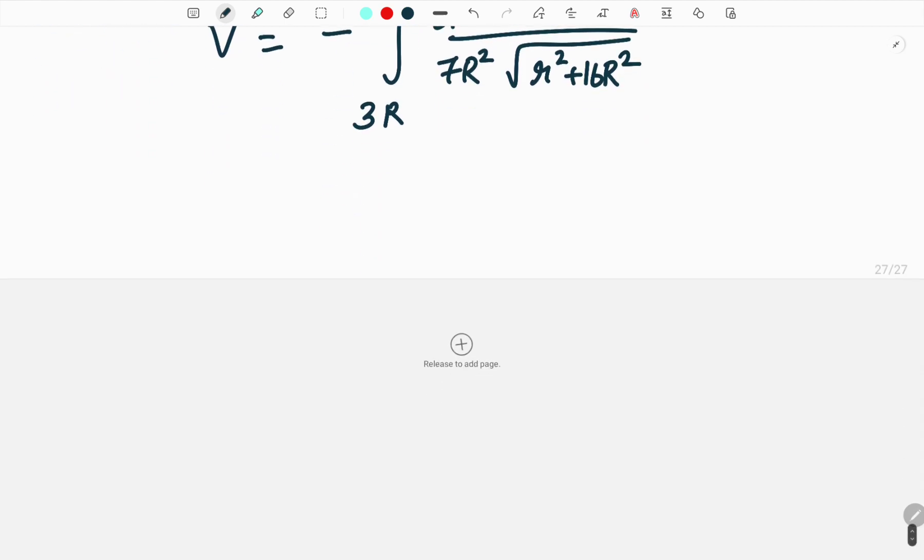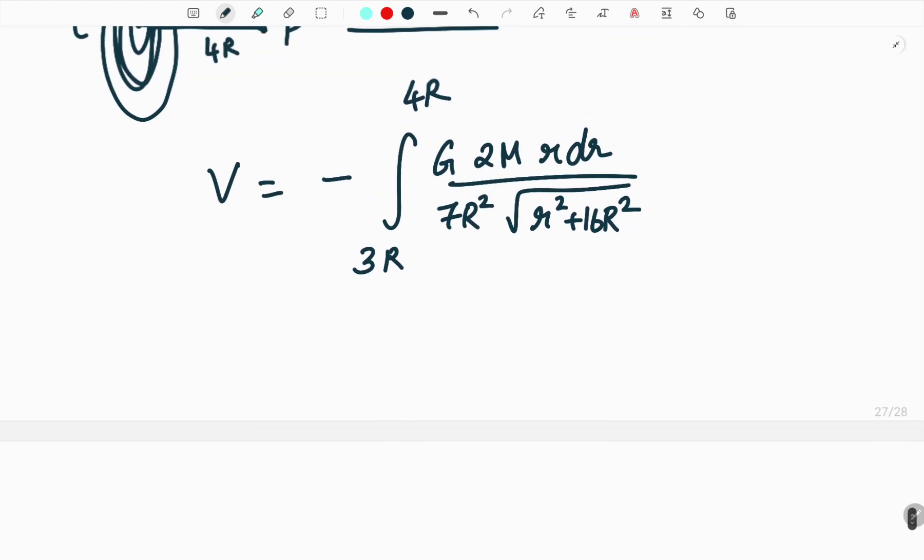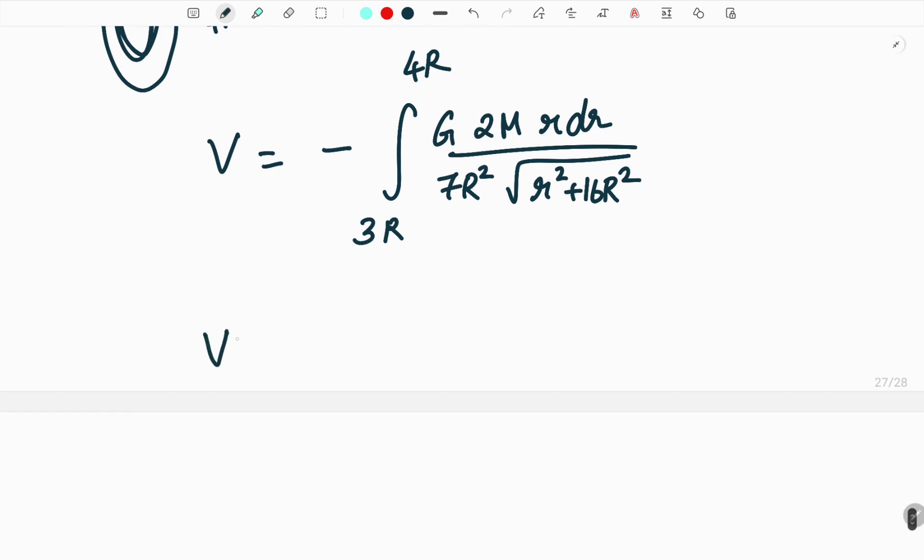Therefore we will have capital V equal to minus 2GM divided by 7r square into integral of 3r to 4r, r dr divided by square root of r square plus 16r square.